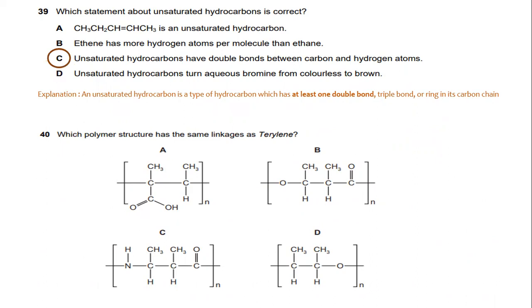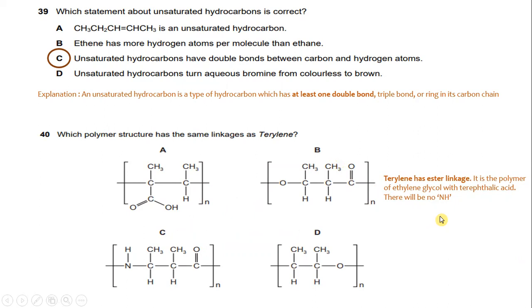Which polymer structure has the same linkages as Terylene? The answer is B. Why not C? Because Terylene has an ester linkage and it is a polymer of ethylene glycol with terephthalic acid. There will be no other linkage. That is the difference between B and C, so the answer is B.